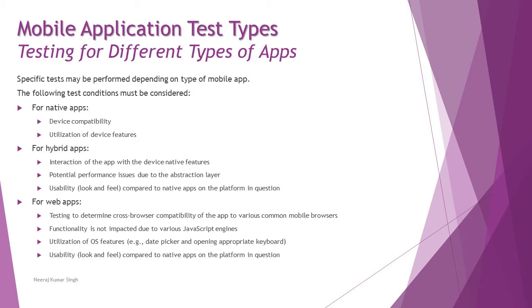The next thing we are talking about is testing for different types of apps. Different types of apps interact with the system software and need certain utilization from resources to work appropriately. Specific test types can be performed depending on the type of mobile app — native apps, hybrid apps, or browser-based apps, also called web apps.